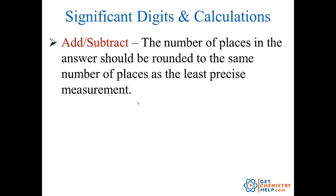Now when we're adding and subtracting, it's a little different. Now it's the number of places in the answer that matters. The answer should be rounded to the same number of places as the least precise measurement — and by places I mean things like the ones place, the tenths place, the hundredths place.